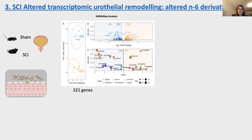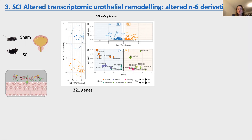Transcriptomic analysis of bladder tissue revealed differential mRNA expression of 321 genes between spinal cord injury and sham tissues. Interestingly, enrichment of differentially expressed genes on gene ontology revealed clusters of genes associated with epithelial cell proliferation (in green), cell adhesion (medium green), and growth response (bright green). In particular, spinal cord injury increased genes involved in activation of WNT and heat shock signaling pathways, with reduced expression of differentiating genes.